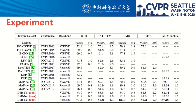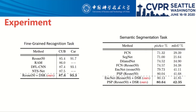We evaluate our model on five challenging texture and material recognition datasets. The results demonstrate the superiority of the proposed method against state-of-the-art methods. Furthermore, we also present testing results of applying our DSR module to fine-grained recognition and semantic segmentation tasks. The experiment results suggest that our proposed DSRNet is not only an effective solution for texture recognition, but also shows great potential in many visual applications.